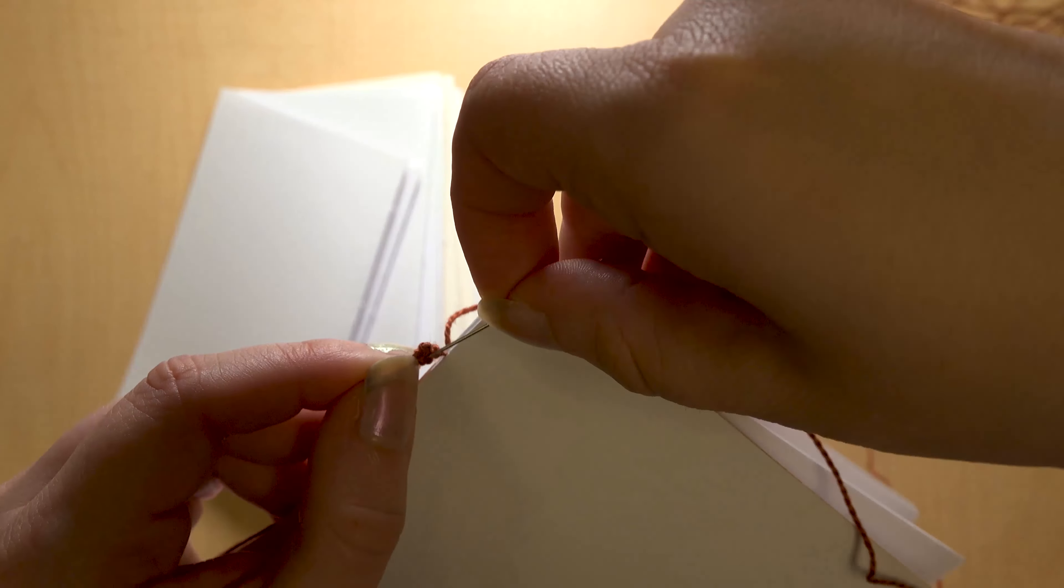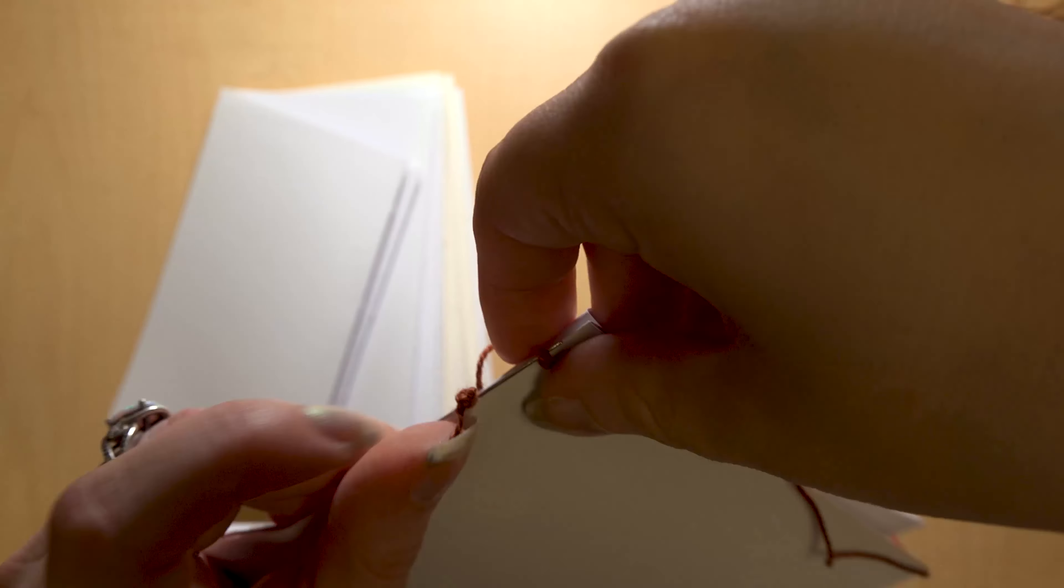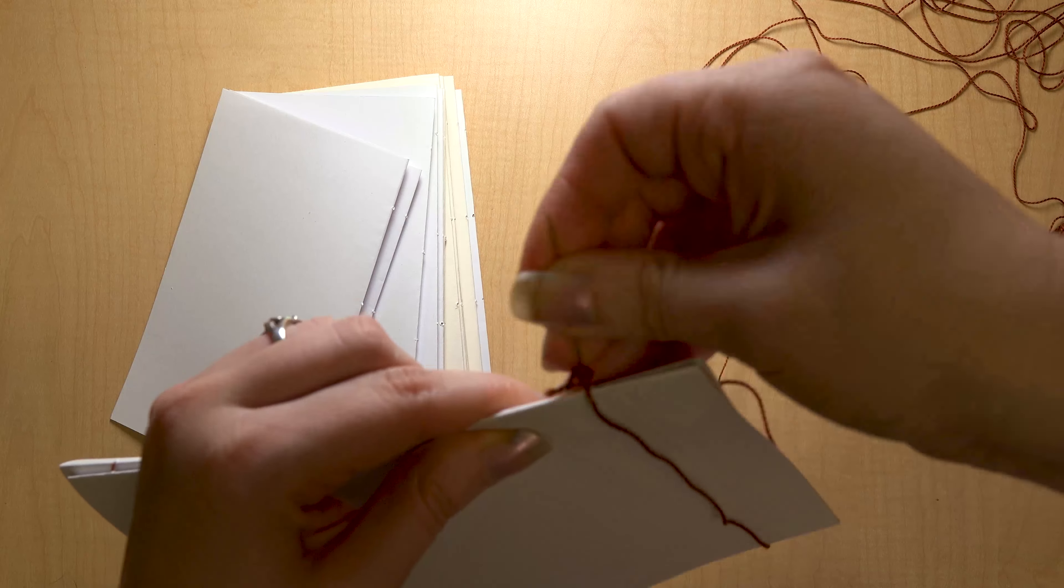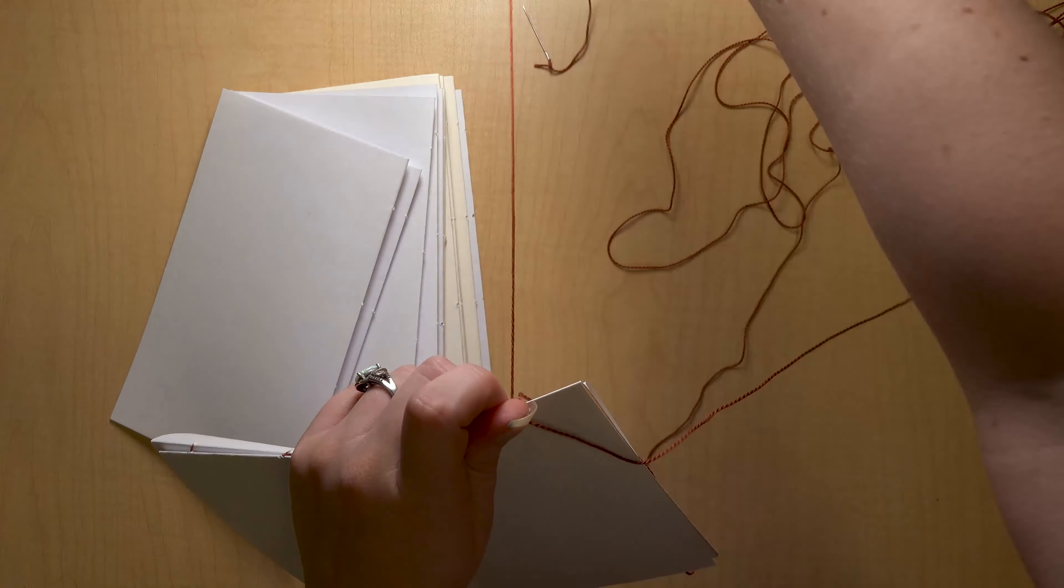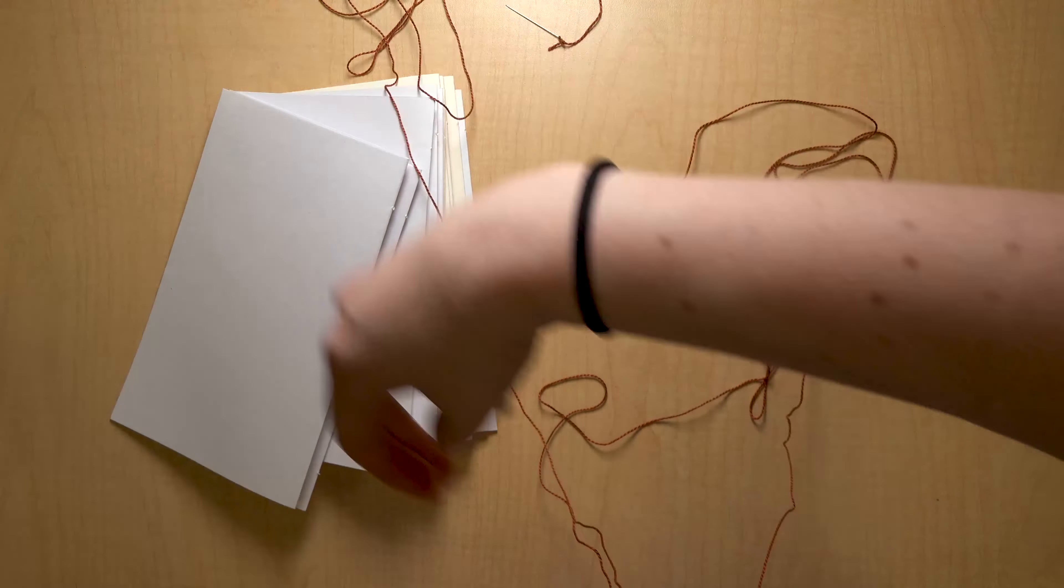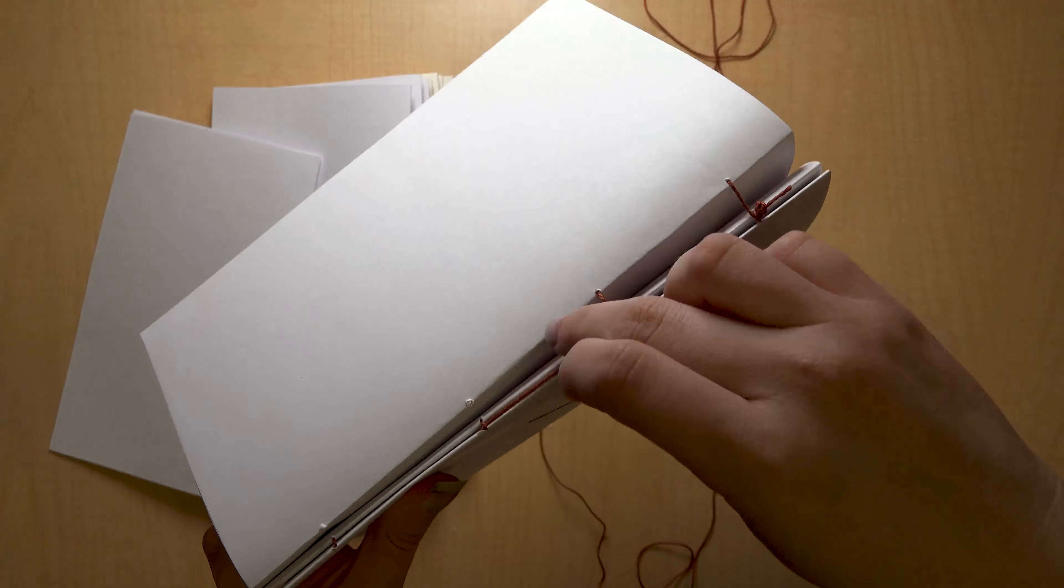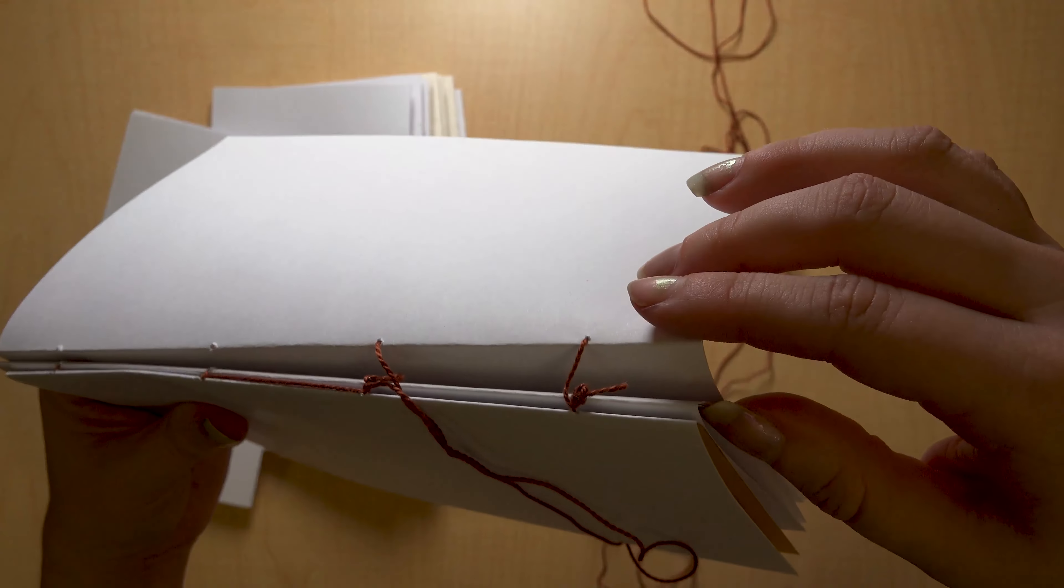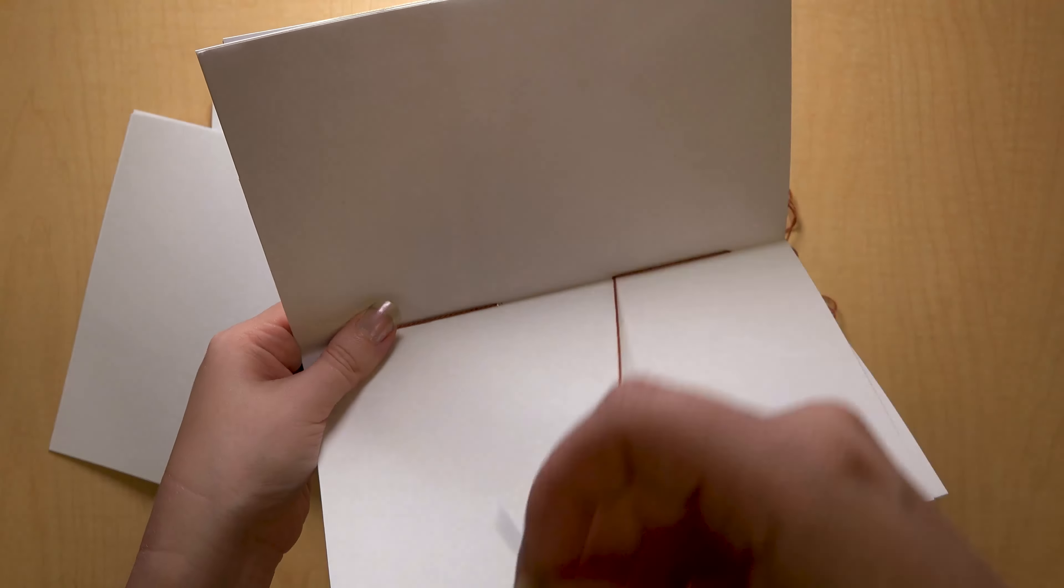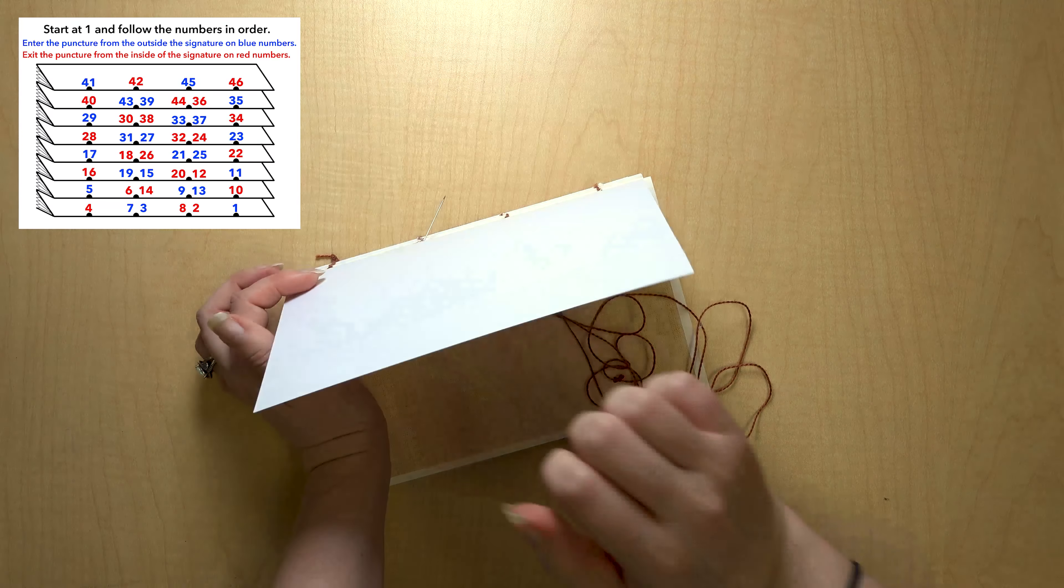Loop your thread through your very first stitch, and then add your second signature. Continue with the same pattern until you've sewn all your signatures together. The diagram in the corner shows the order in which you should sew.